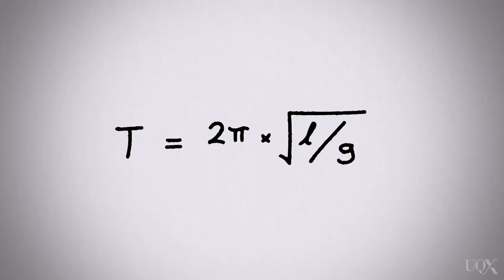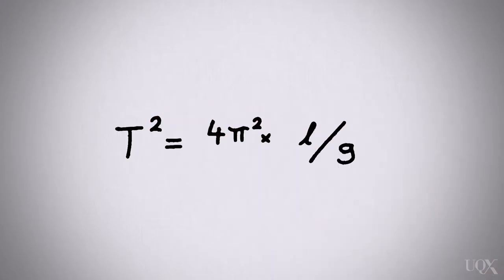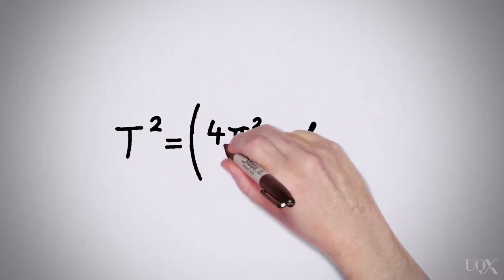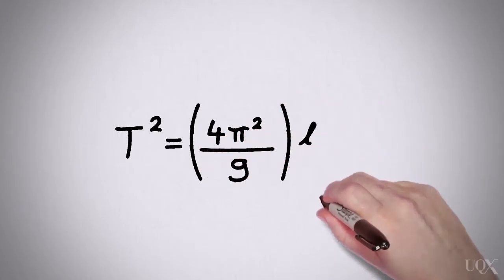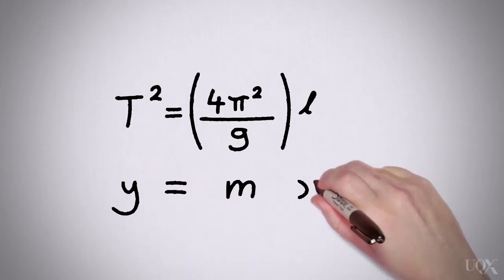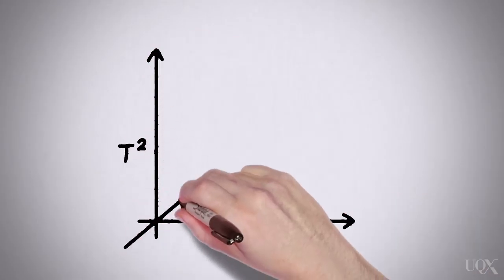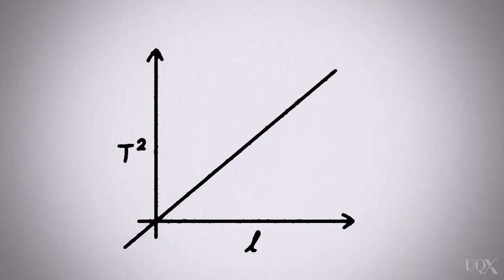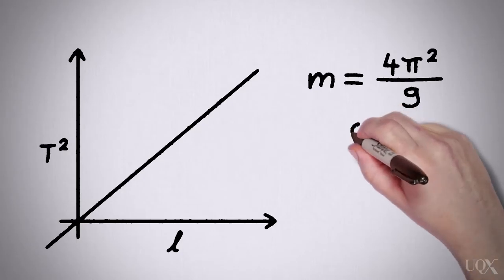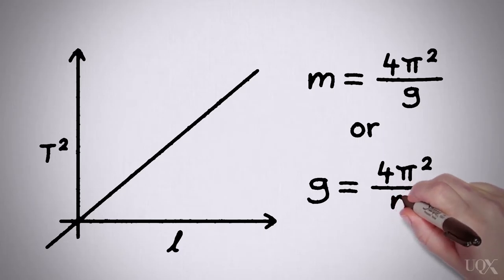This can be converted to gradient-intercept form. If we square both sides, we can remove the square root. This can be rearranged further to read: time squared equals open bracket 4 pi squared over g close bracket multiplied by length. This can then be used as an equation of a straight line with c being 0. We can plot time squared over length to reveal a straight line, so the gradient m of the line is 4 pi squared over g. Or we can rearrange this to express g as 4 pi squared over gradient m.